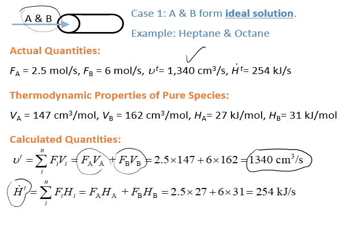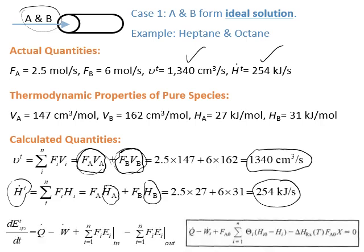We also calculate the total enthalpy through the summation of f_i times h_i — using the pure species molar enthalpies — and we get a value that is exactly the same as the actual quantity. This means I can calculate the total properties of a mixture by simply summing the properties of the pure constituting species, provided the solution is ideal. Therefore, these equations are correct and it is fine to use them for ideal solutions.